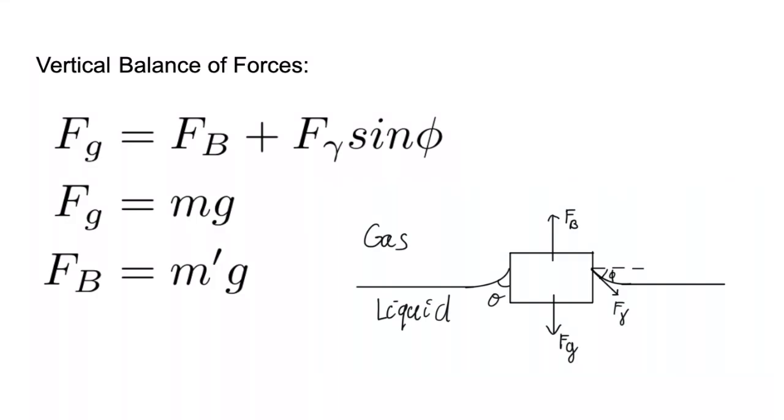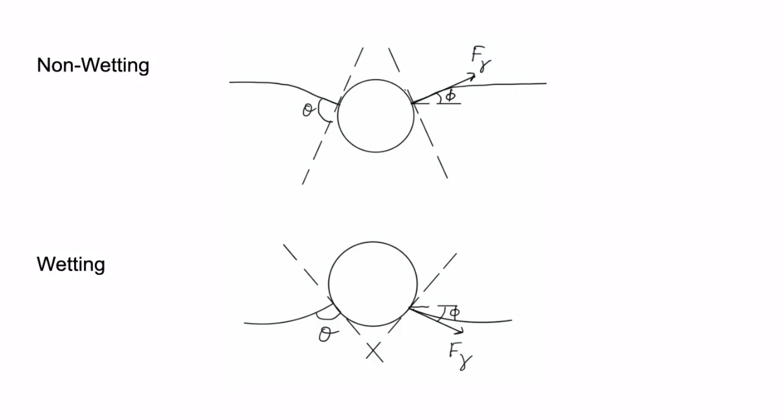When the displaced mass is larger than the mass of the object, the gravitational potential energy decreases as the object moves up along the surface. Therefore, wetting objects are attracted to high points of the surface such as those created by wetting objects.